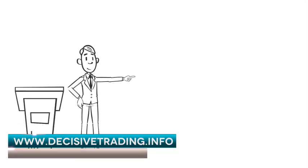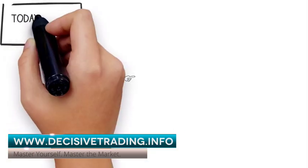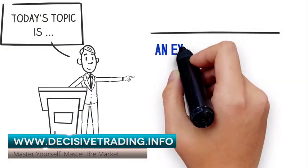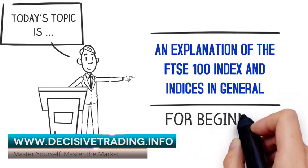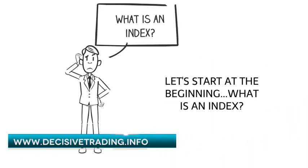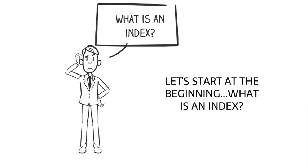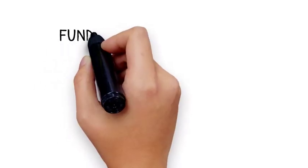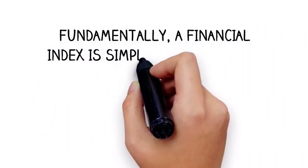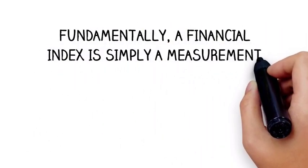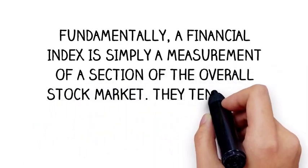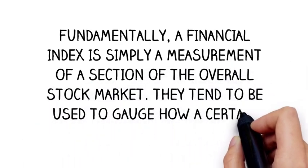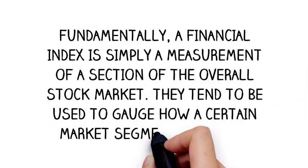In this video I am going to give you an explanation of the FTSE 100 index and indices in general for beginners. Let's start at the beginning. What is an index? Fundamentally, a financial index is simply a measurement of a section of the overall stock market. They tend to be used to gauge how a certain market segment is doing.